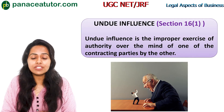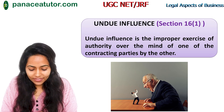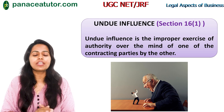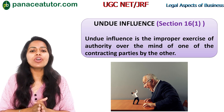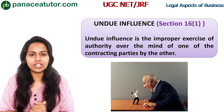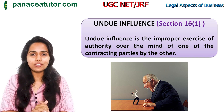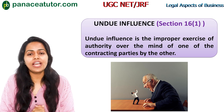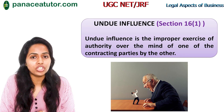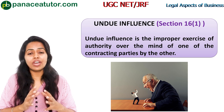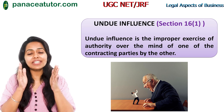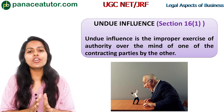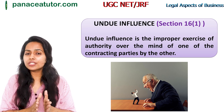The next element vitiating free consent is undue influence under Section 16(1). Undue influence is the improper exercise of authority over the mind of one of the contracting parties by the other. In coercion the person is physically tortured, while in undue influence the person is mentally pressured. For example, if your boss tells you that if you put in overtime he will promote you, that is mental pressure — undue influence. A contract entered into under undue influence is not a valid contract.